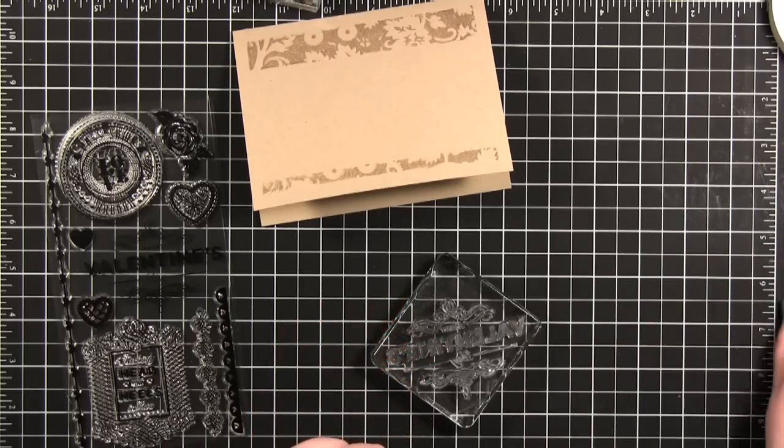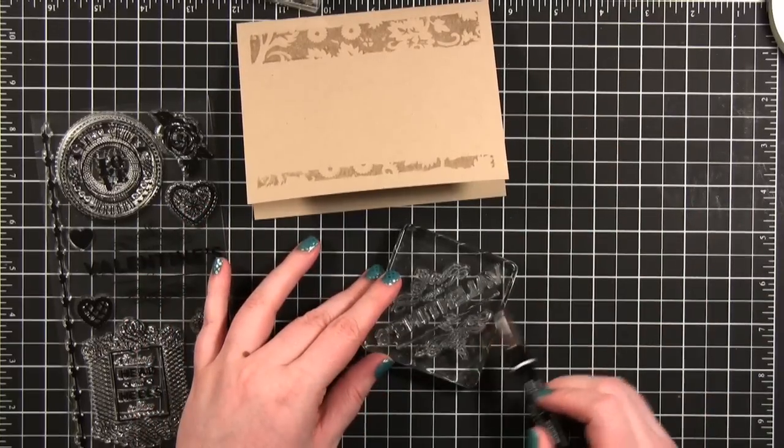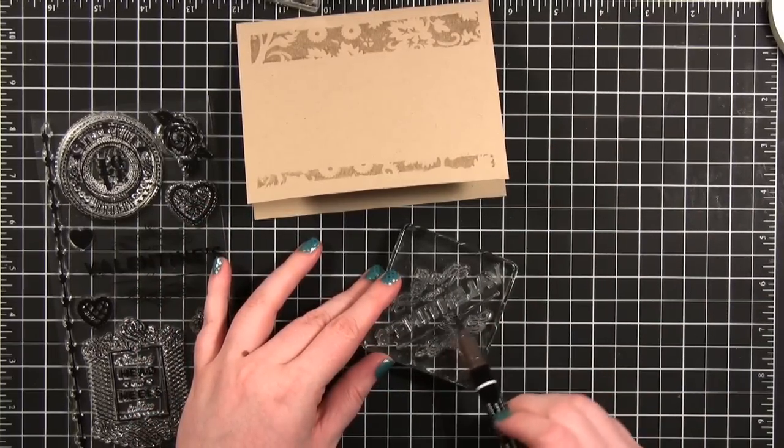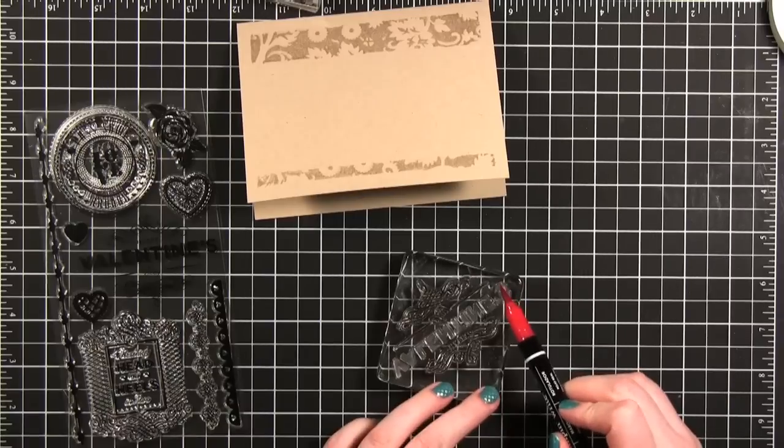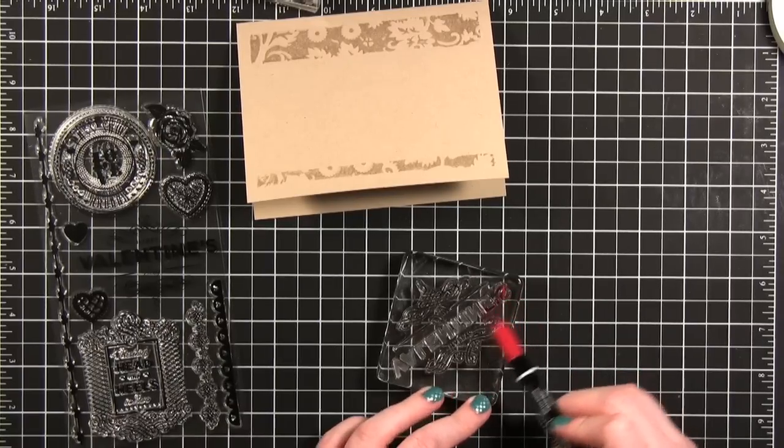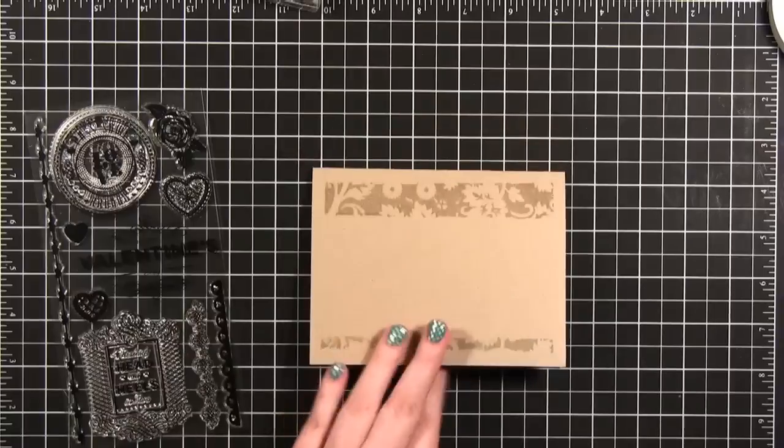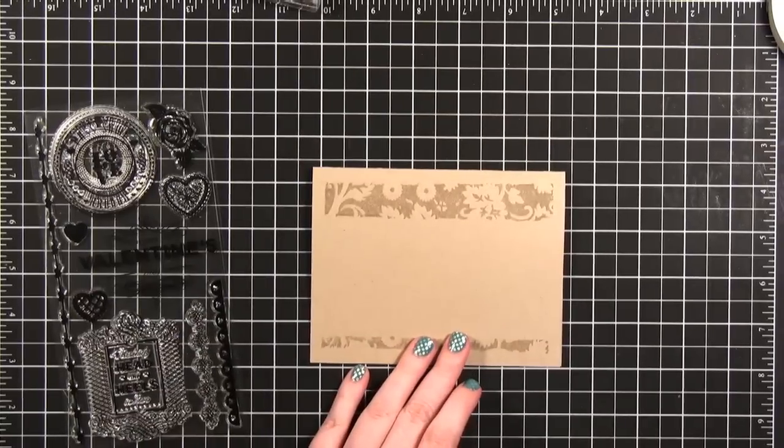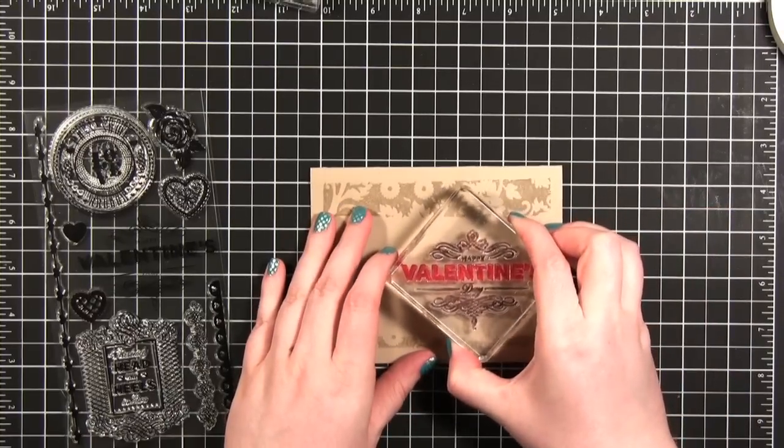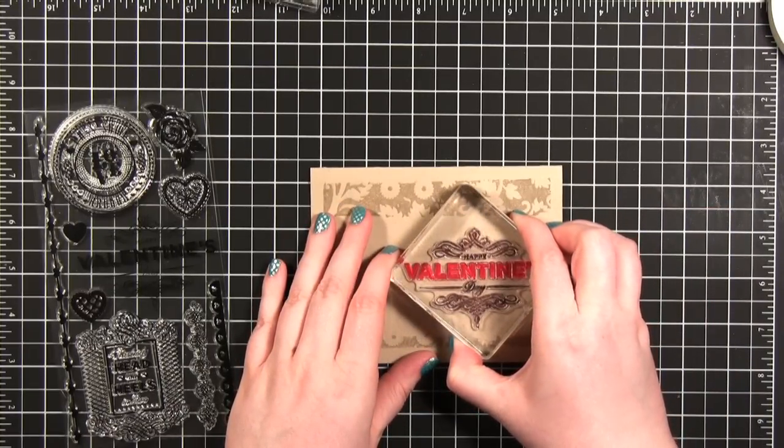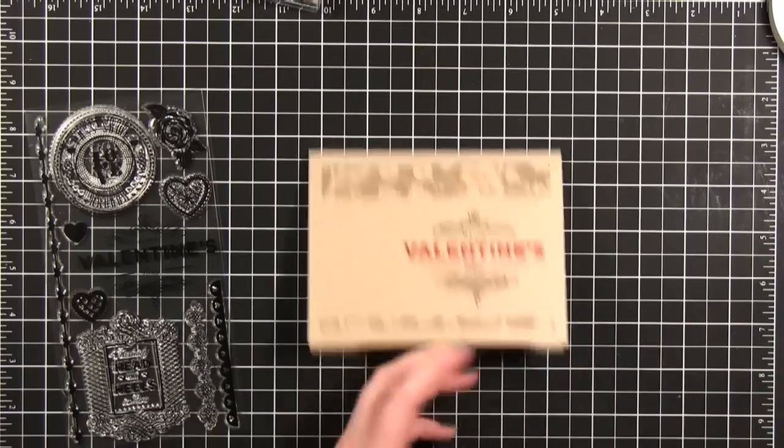I'm going to go ahead and I'm doing the top and bottom of the stamp in brown. So I'm going to go ahead and just start applying that. Now onto the red. I'm going to breathe on the stamp. Then I'm going to stamp it. Beautiful.